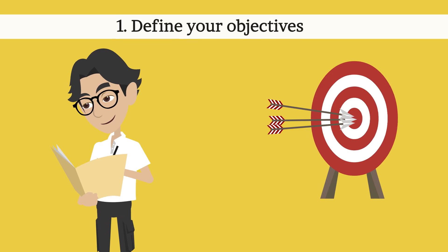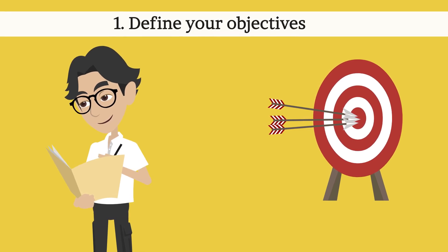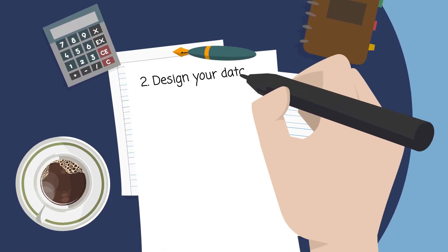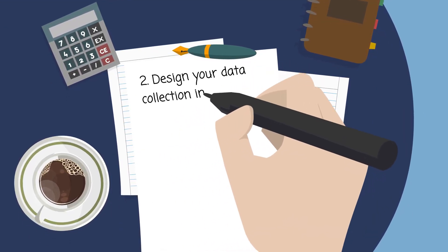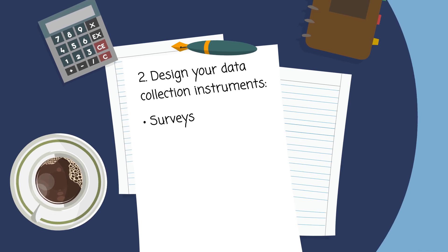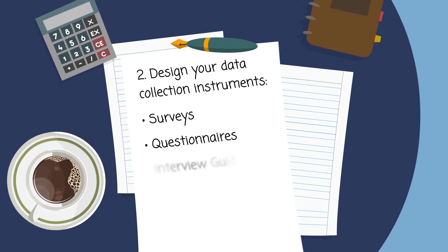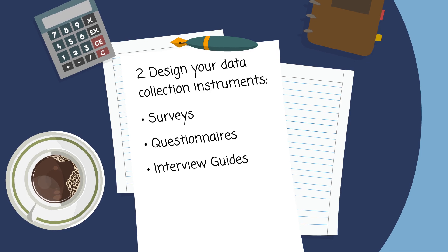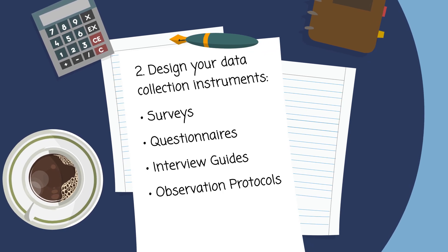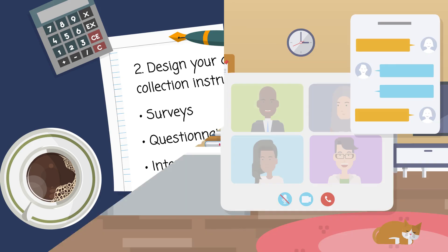Key Steps in the Data Collection Process: Step 1 — Clearly define the research or data collection objectives. Step 2 — Design your data collection instruments, developing tools such as surveys, questionnaires, interview guides, or observation protocols.